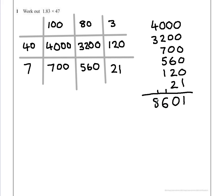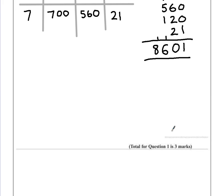So 8,601. Now the question didn't ask for 183, it asked for 1.83, which means that we need to move the decimal point back, divide our answer by 100, to give a final answer of 86.01.